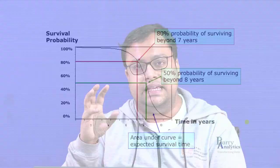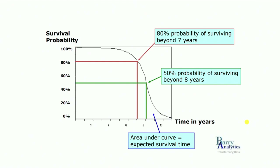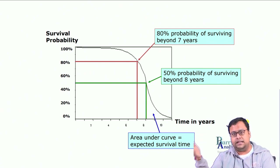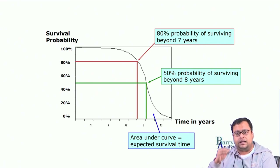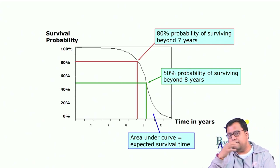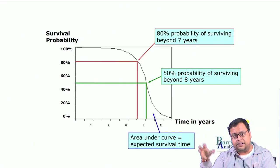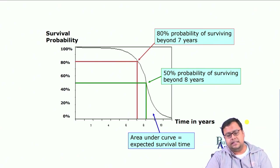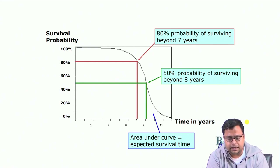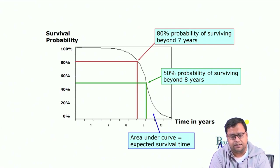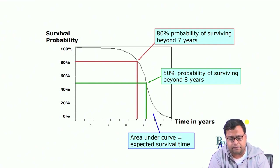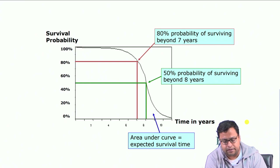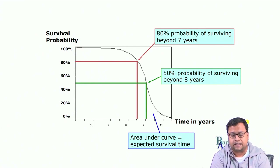So what is survival analysis? You will see that this is a survival probability curve. It talks about: if you are alive today, what is the probability that you will be alive tomorrow, the day after tomorrow, 2 days later, 3 days later, 4 days later? How much is the probability that over a certain period of time you will be alive? This is important for customer lifetime calculation. Initially 80% of people survive beyond 7 years, and then it drops to 50% surviving after 8 years. The end of the curve represents the expected survival time.